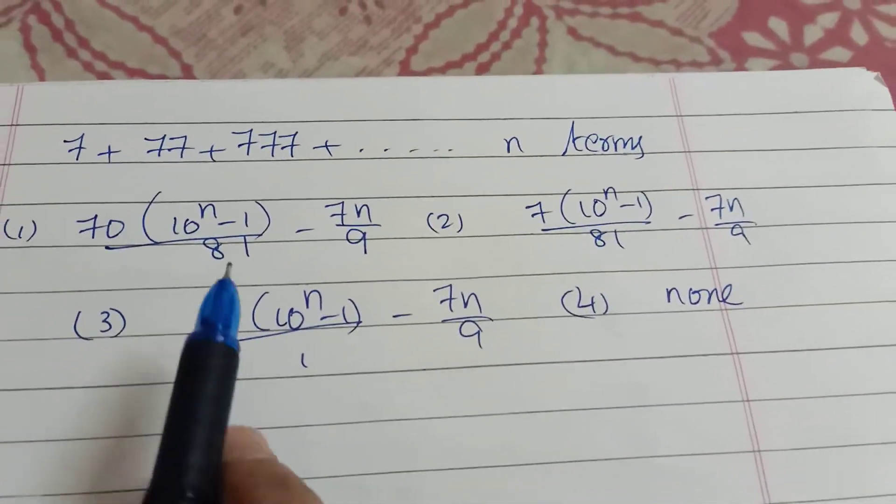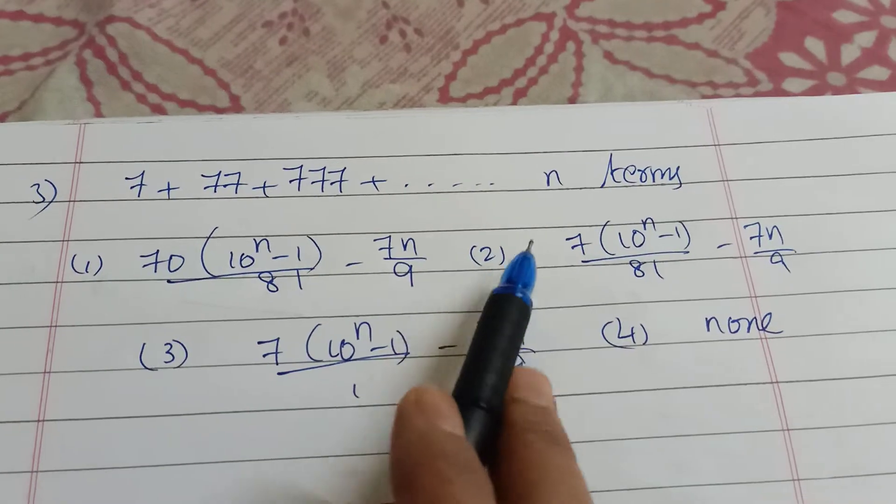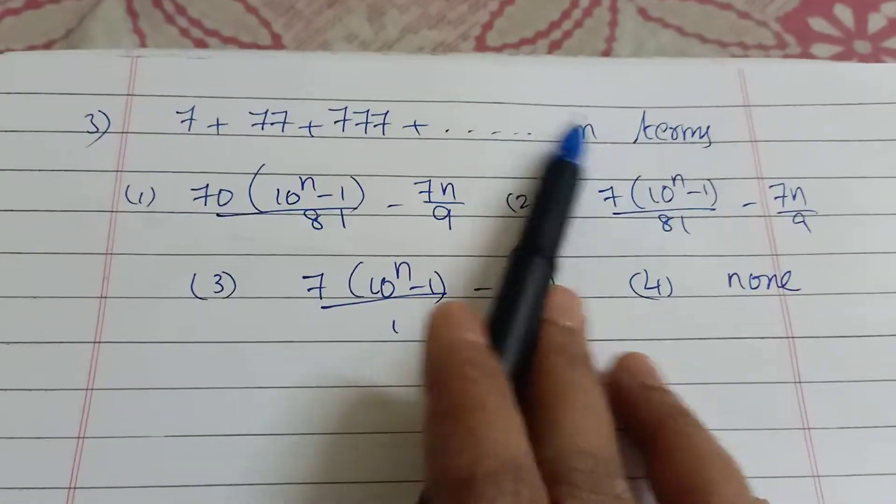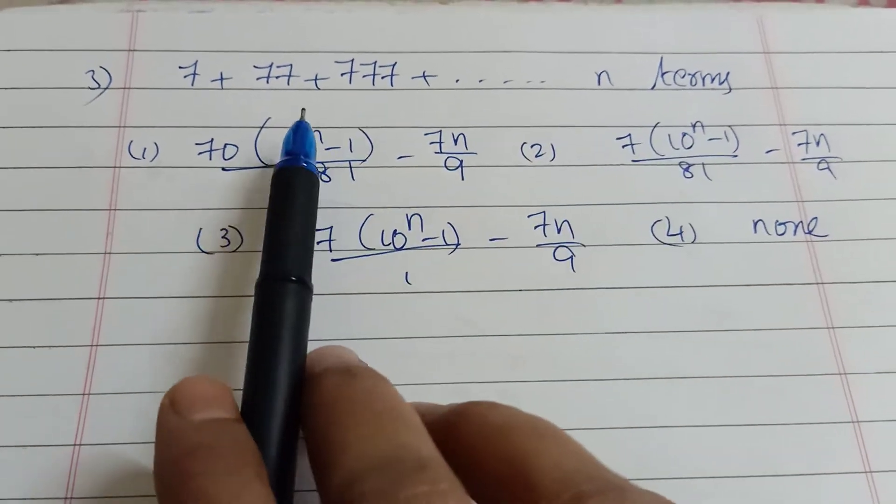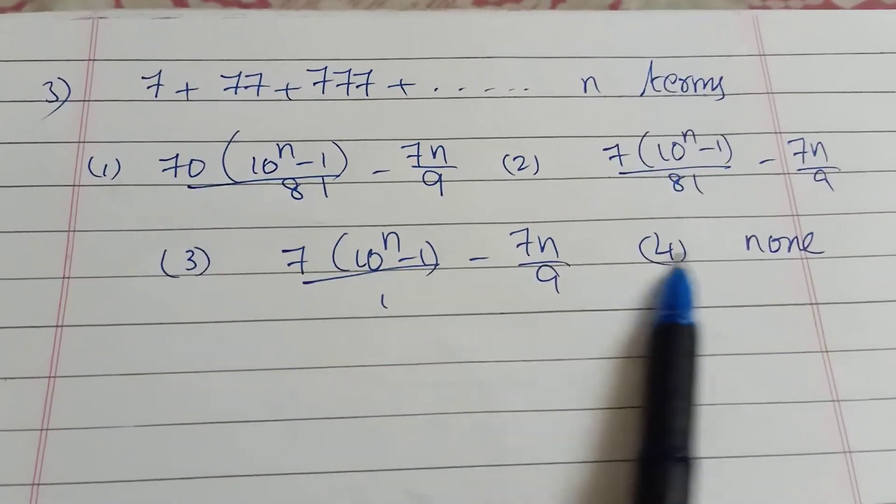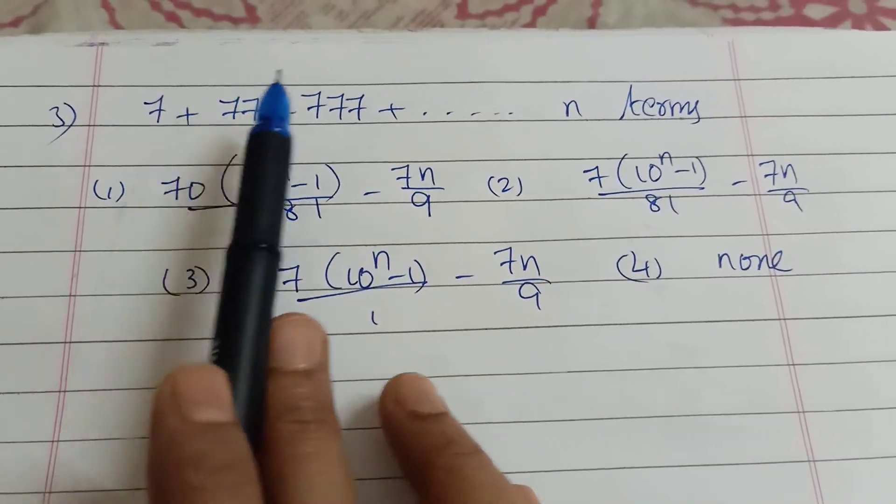Third one, listen: 7 plus 77 plus 777 plus and so on, n terms. Find the value of the nth term. Options are given: 1, 2, 3, fourth one is none.